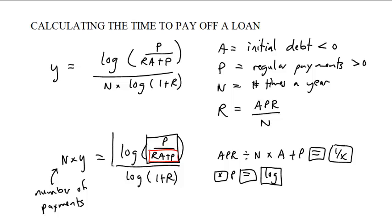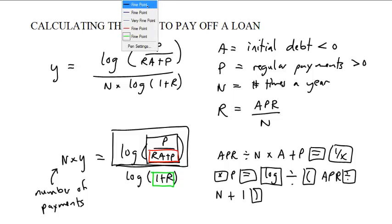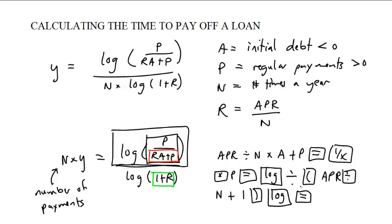That gives me the full argument for the log. Then I would hit the log button, giving me the whole numerator. Then I would hit divided by, open parenthesis, type in the APR, divided by n, plus 1, close parenthesis, and that gives me the denominator expression. Then I would type log and equals, and I would have done the entire calculation in one go. This is the cheap calculator method.